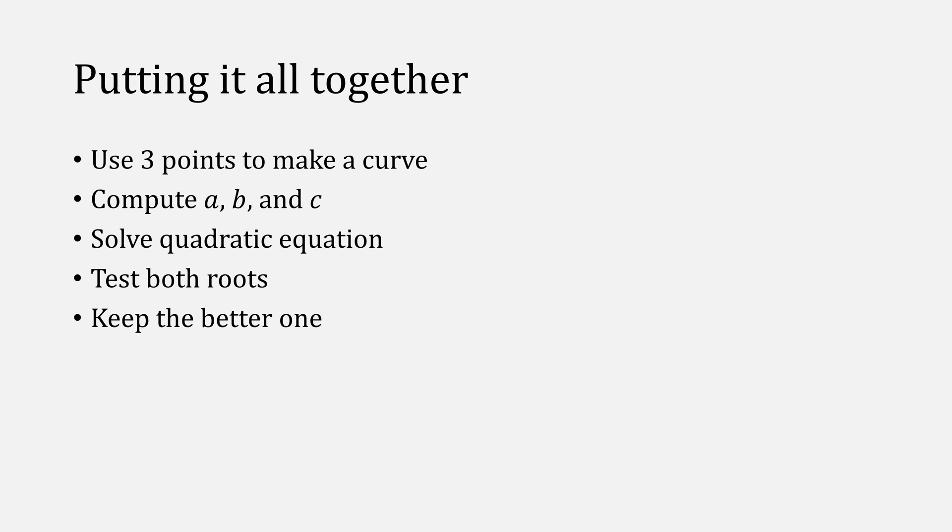So in summary, we used three points to find a Lagrange polynomial. Then we computed a, b, and c of that Lagrange polynomial, and solved it using the quadratic equation. Afterwards, we tested both roots, and we kept the better one. Muller's method simplifies all these steps though.